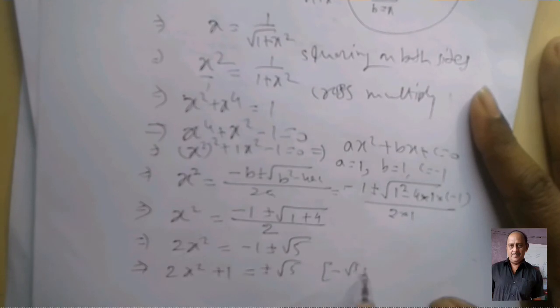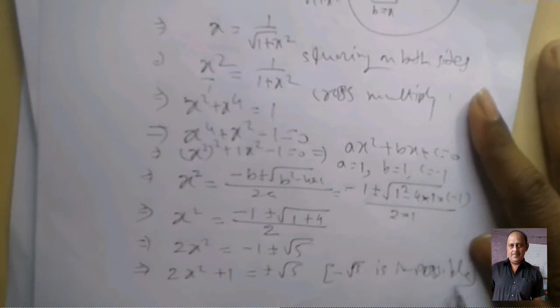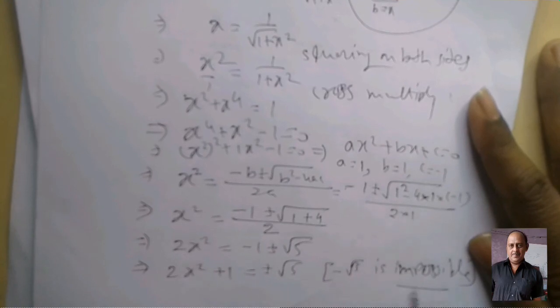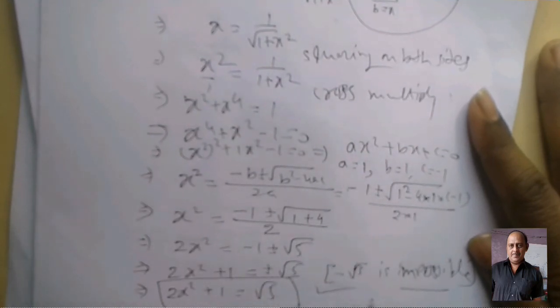Negative root 5 is impossible, therefore 2x² plus 1 equal to root 5. This is solution.